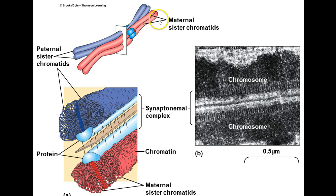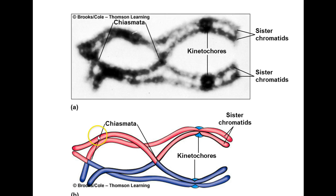Looking at this diagram, we have the maternal chromosome and the paternal chromosome — a copy of the chromosome this individual got from mom, and a copy from dad. These are held together by the synaptonemal complex, which you can see in this electron micrograph.